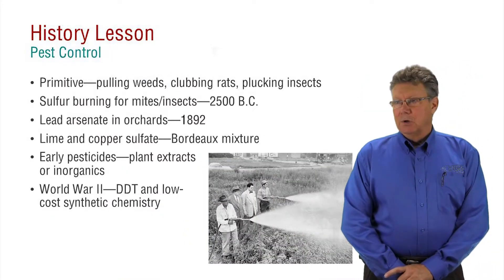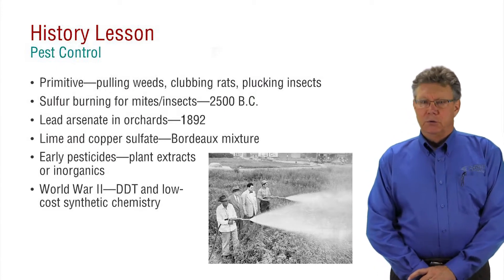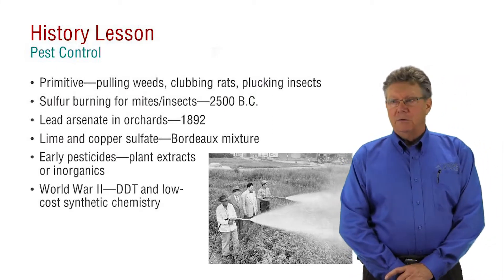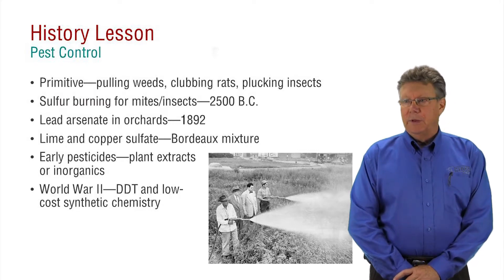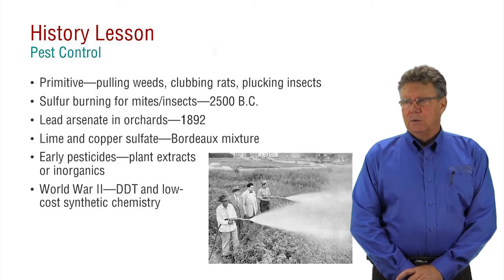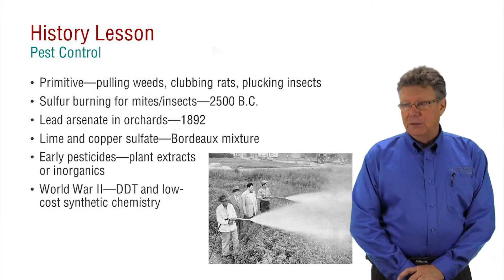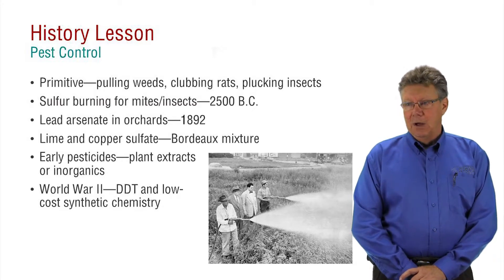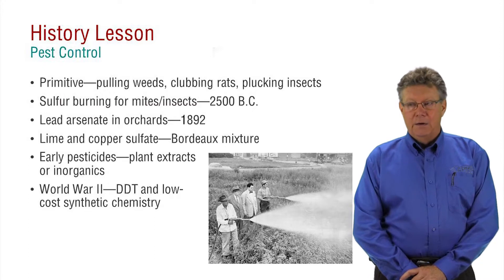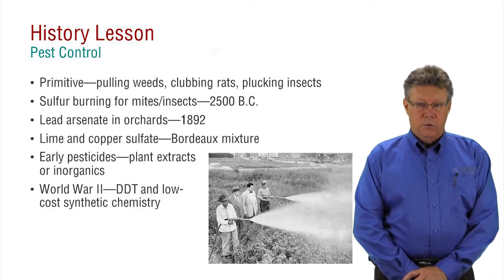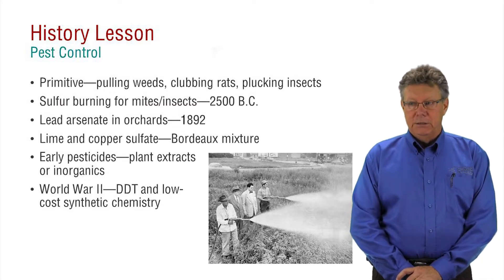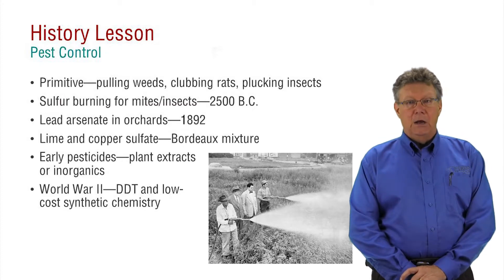Our ancestors controlled pests usually using brute force and manual labor. Thousands of years ago, chemicals that affected pests were discovered through trial and error. When sulfur was burned, it was found to affect insects and mites. Later, several other inorganic materials like lead and arsenate were used as pesticides. Toxic plant extracts such as nicotine from tobacco were also used.